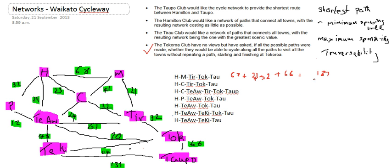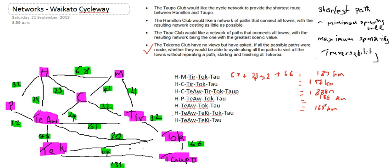If I was doing this properly I'd make you go through and write out each one, but I don't have time to demonstrate all of them. So: Hamilton, Cambridge, Tyrell, Tokaroa is 157 kilometres. Hamilton, Cambridge, Tiawamutu, Tyrell, Tokaroa is 188 kilometres. The route through Pyonga is 180 kilometres. The Tokaroa-Tiawamutu route is 165. The Tukiti route is 208.